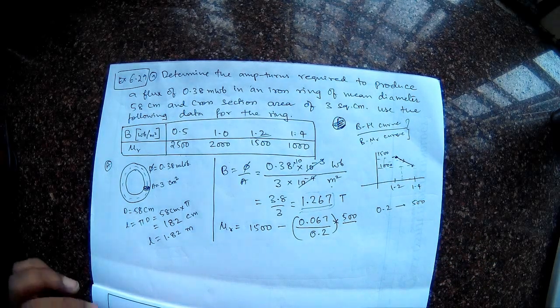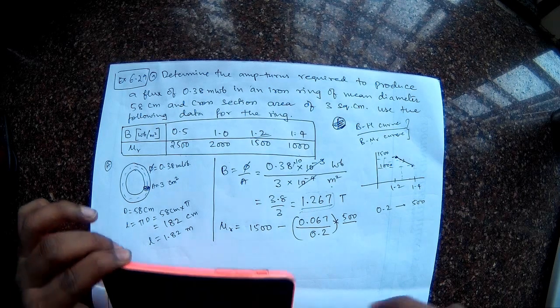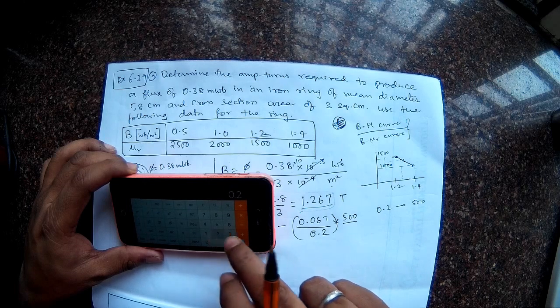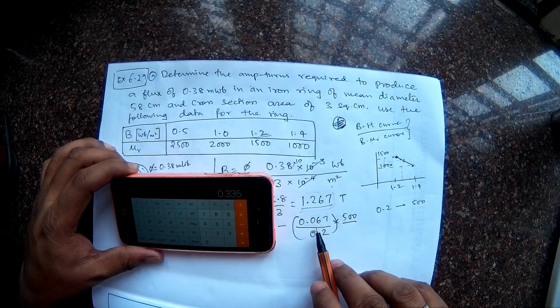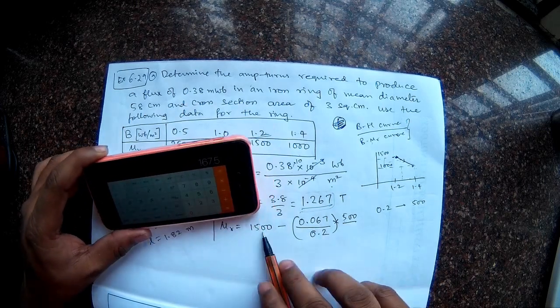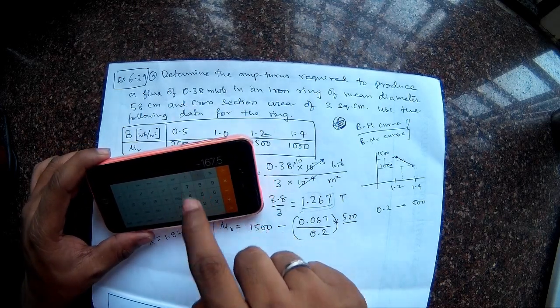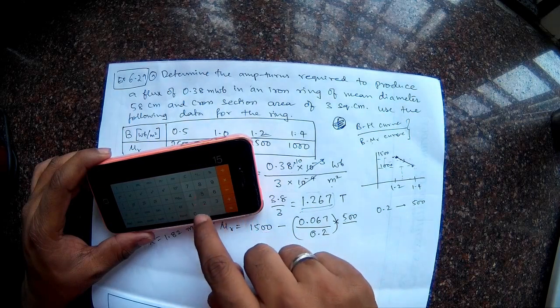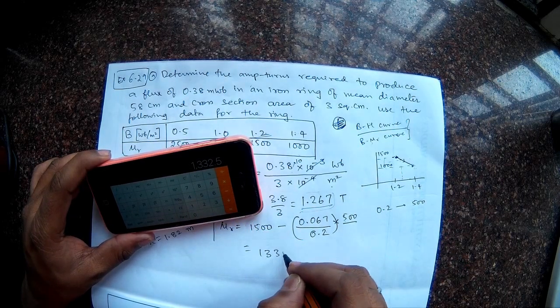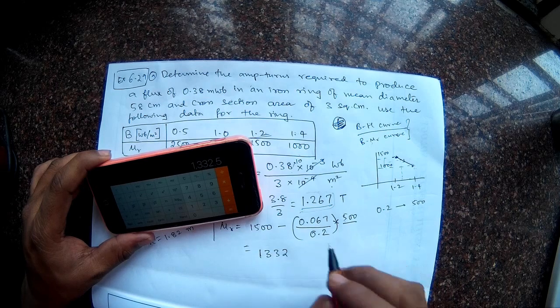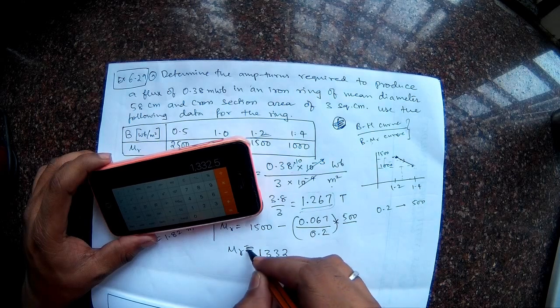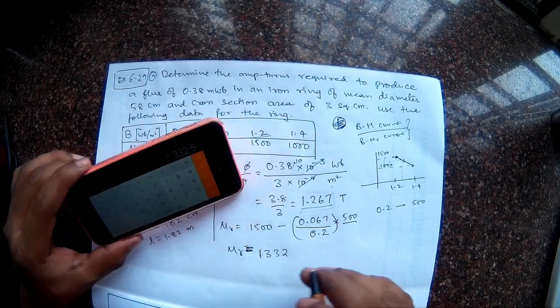So what is this? Let me calculate that. So 0.067 divided by 0.2 is 0.335, so multiplied by 500. So this 167.5 I have to subtract from 1500. So if I do that, I am getting 1332.5, I will just ignore. This will be my mu R. So remember mu R is related to permeability, so it does not have any unit.